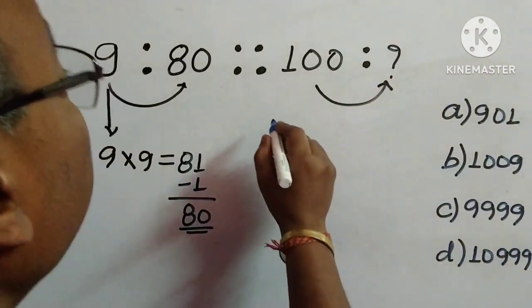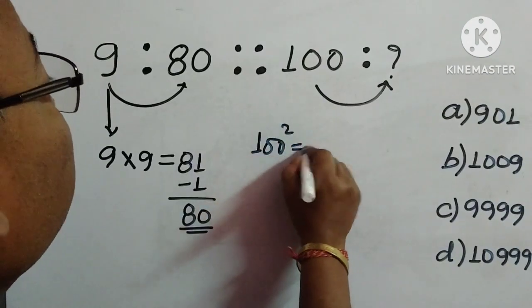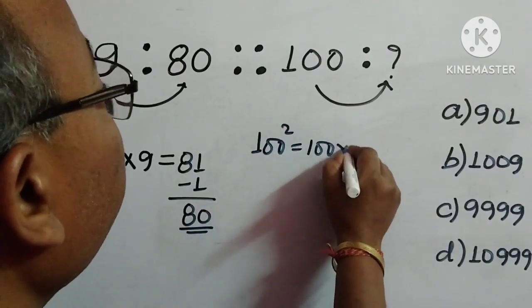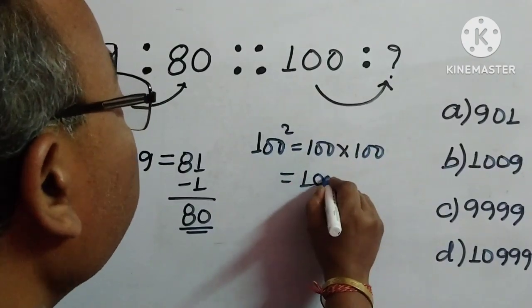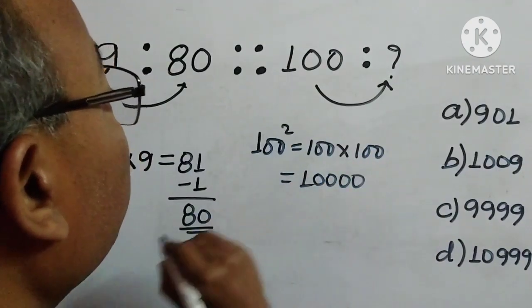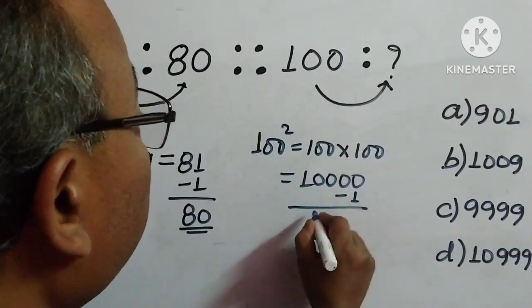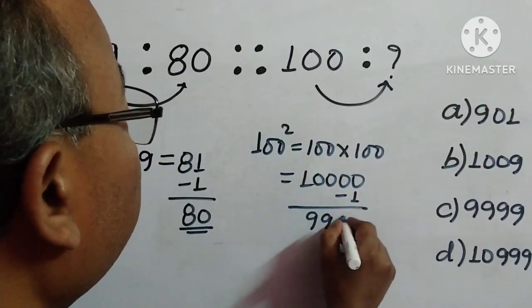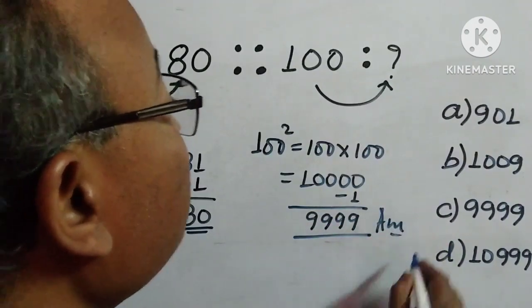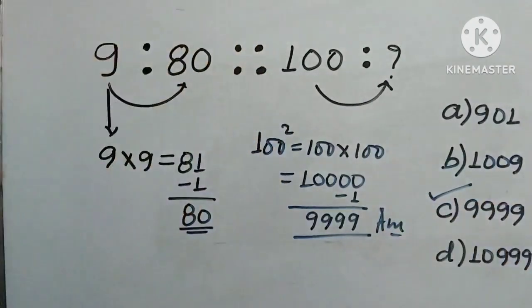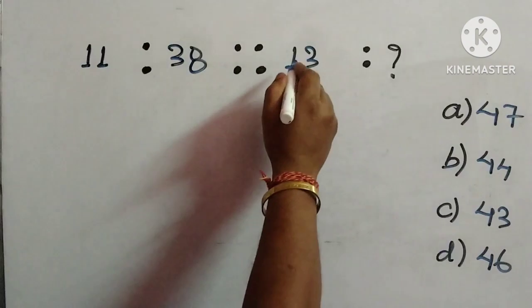We follow the same process for 100: 100 into 100 gives 10000. Then subtract 1, so the answer is 9999 — option C. Next question: 11 is to 38 equals 13 is to what? We need to find this number and four options are given.